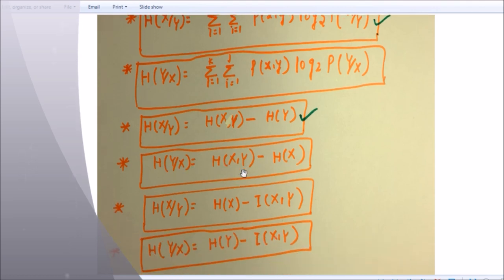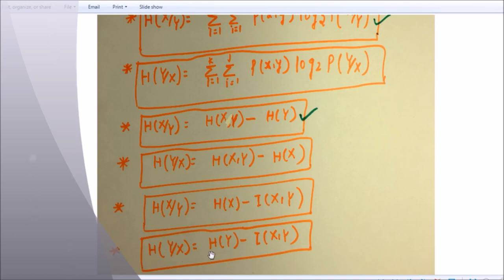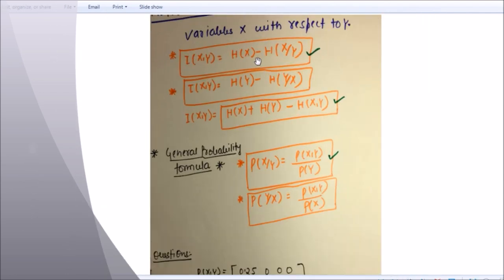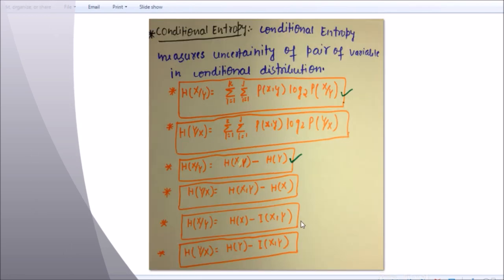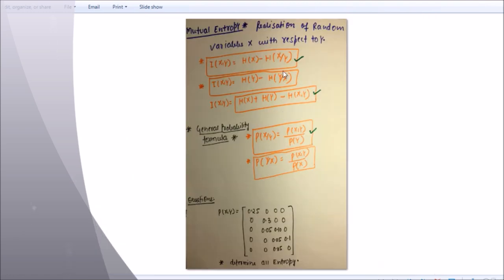H(Y|X) is equal to H(X,Y) minus H(X). And H(X|Y) is equal to H(X) minus I(X;Y), where I(X;Y) is nothing but mutual entropy. H(Y|X) is equal to H(Y) minus I(X;Y). The third type of entropy is mutual entropy — the realization of random variable X with respect to Y. I(X;Y) is equal to H(X) minus H(X|Y).